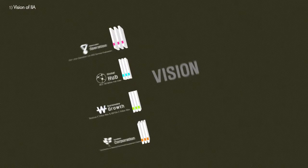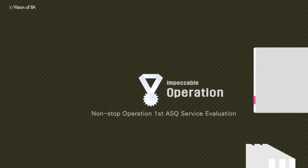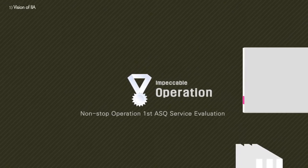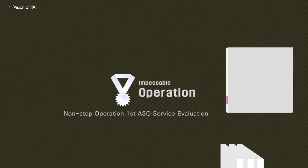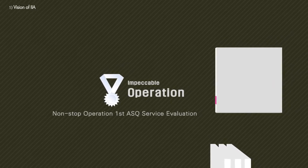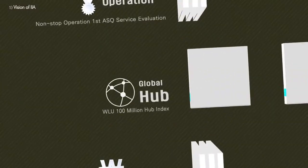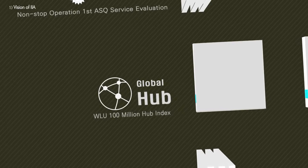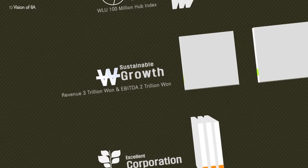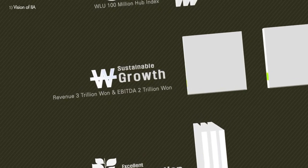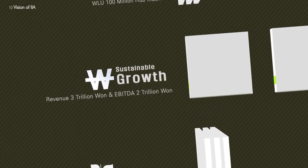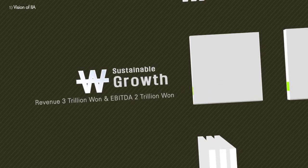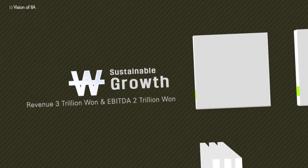Incheon International Airport's vision is organized into four parts. First, Incheon International Airport was established as an airport that operates non-stop and holds the number one place in ASQ's airport service evaluation. Secondly, Incheon International Airport is working to become one of the five major airports in the world. Thirdly, as an enterprise, Incheon International Airport constantly works to maximize profitability and facilitate the growth of air travel demand by venturing into creative business models.